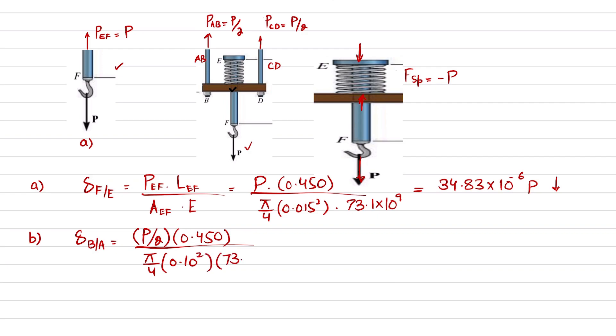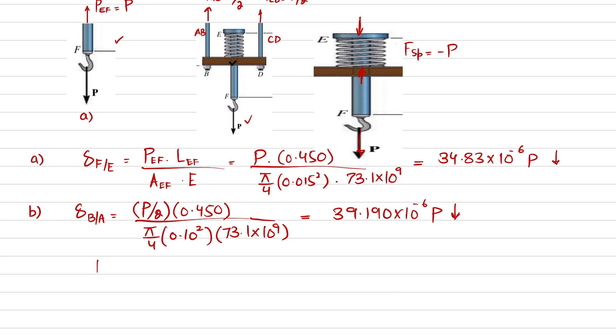D is 10 millimeters, so in meters it's 0.010 squared, and E is 73.1 × 10⁹. So when you solve this, you will get 39.190 × 10⁻⁶ P. It is also downward, which means that B moves away from point A.